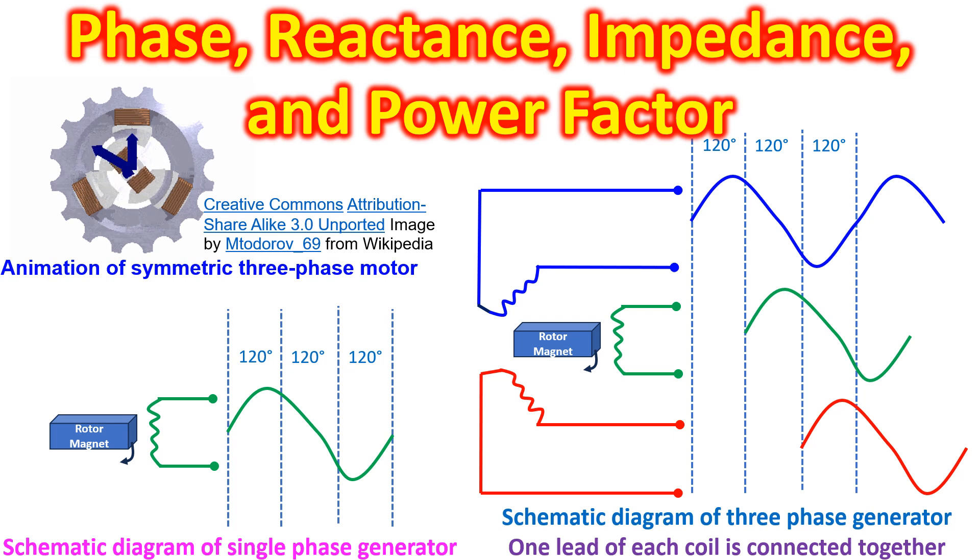Phase of a wave is the angular displacement of a sinusoid from a reference point or time. Phase in the context of alternating current can be considered as corresponding to the angular position of the armature in the AC generator.